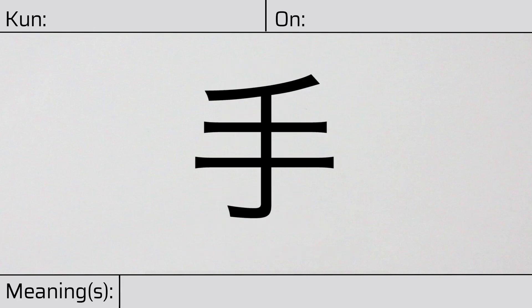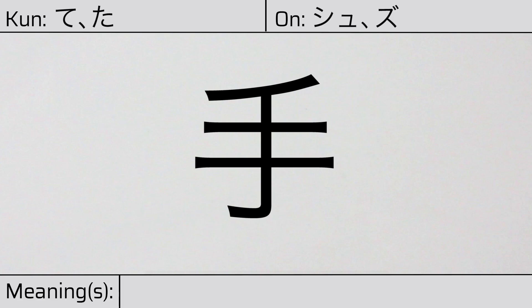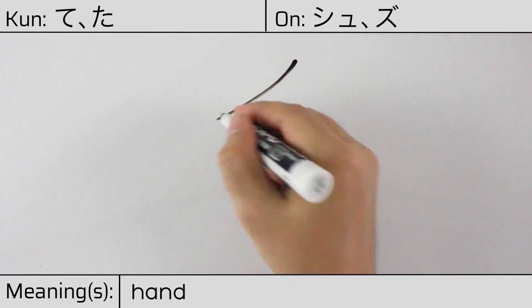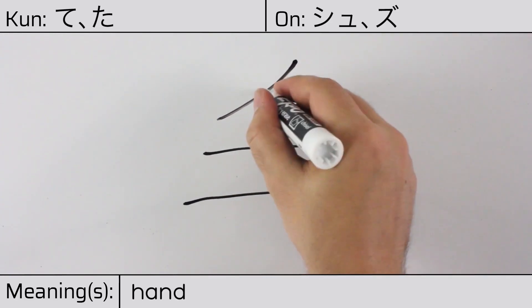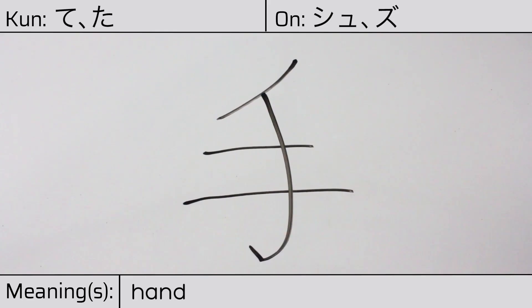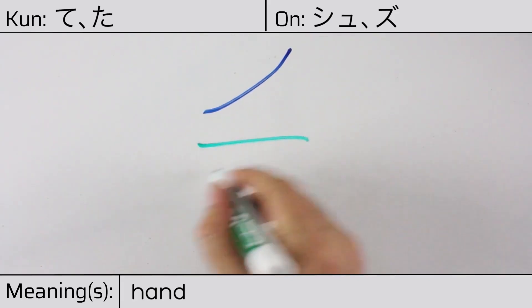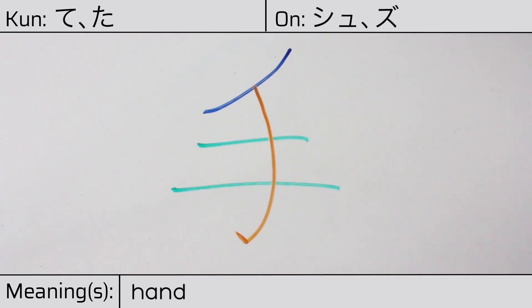Welcome to this lesson on Japanese kanji. Today, we'll be discussing this character. This kanji has kunyomi or Japanese readings of te or ta, and it has onyomi or Chinese readings of shu or zu. This character has the meaning hand. Here is the stroke order. This character is made up of the following radicals or parts: katakana no, kanji ni, and a hook radical at the end.